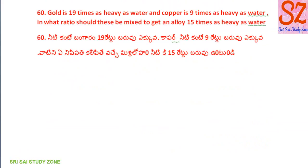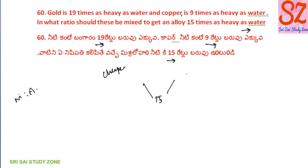Gold is 19 times as heavy as water and copper is 9 times as heavy as water. In what ratio should these be mixed to get an alloy 15 times as heavy as water? Using alligation: gold to 15 difference is 19 minus 15 equals 4, and 9 to 15 difference is 15 minus 9 equals 6. So the ratio is 4 to 6, which simplifies to 2 to 3.